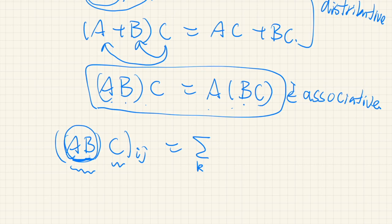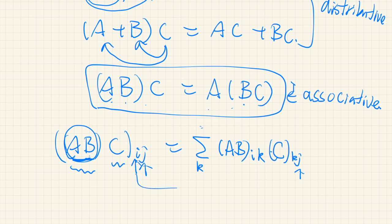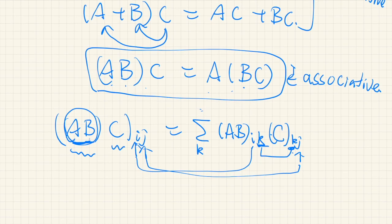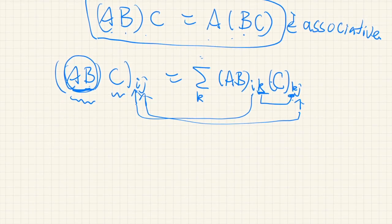This index runs from one to some specified number, but we don't specify it here explicitly. Anyway, AB is a matrix, and its IK element is multiplied by matrix C's KJ element — this J and this J, this I and this I and this J. In between we have the same K. This is according to the definition of matrix multiplication. Then we apply the definition of matrix multiplication to this part, leaving the summation with index K.